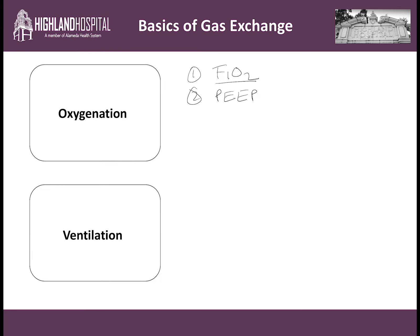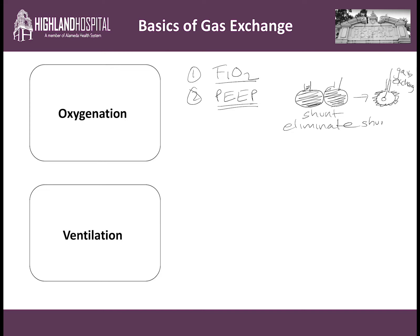And number two, it's the use of PEEP. If someone's alveoli are completely filled up with fluid or pus, that person has a shunt. If I open up their alveoli a little bit with a little bit of PEEP, then the fluid goes out into the interstitium, allowing the alveolus to participate in gas exchange. PEEP works to eliminate shunt, which is a cause of hypoxic respiratory failure, so the use of PEEP will improve your O2. More FiO2 will improve your O2. Remember, a PaO2 of 58 or higher is our goal — we do not need it to be 200 or higher. Keep that oxygen low to avoid oxygen-mediated lung injury.